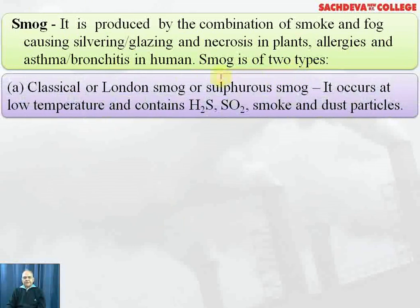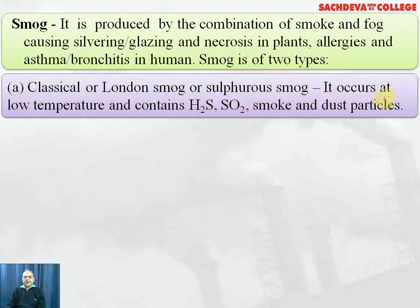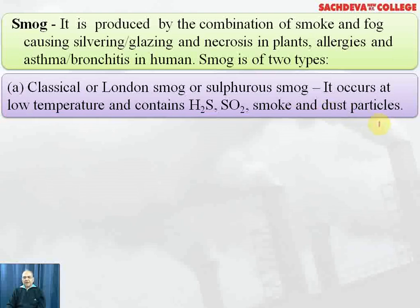Smog is of two types. The first is classical or London smog, also called sulphurous smog. It occurs at low temperature and contains H2S, SO2, smoke and dust particles. Classical London smog resulted in the death of 4,000 people.